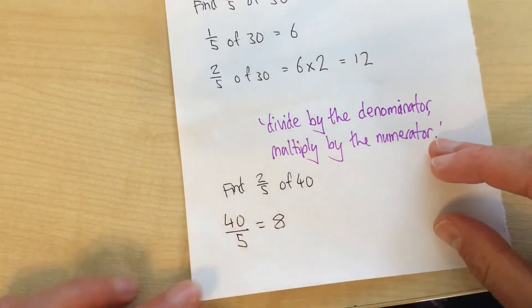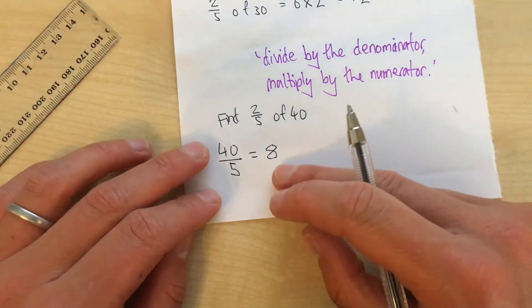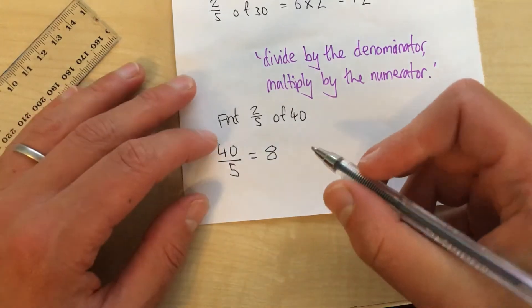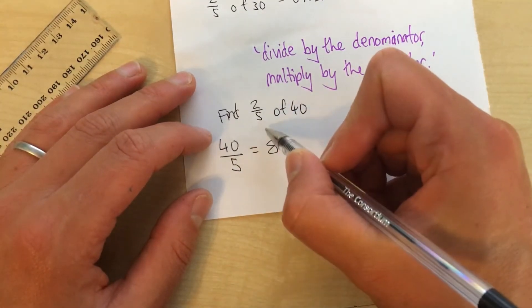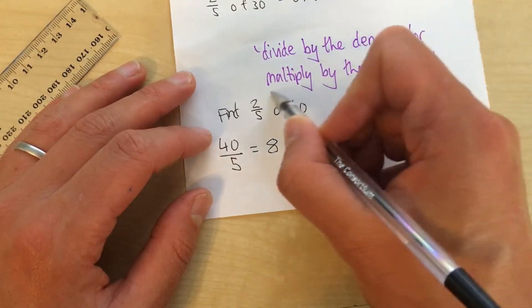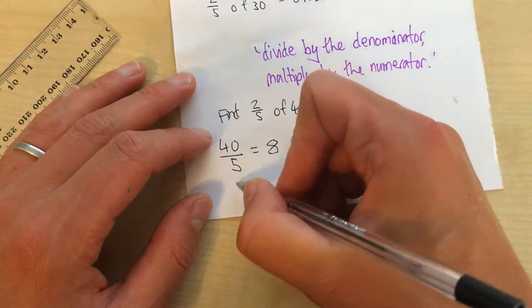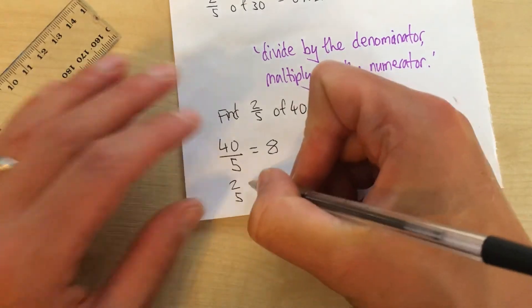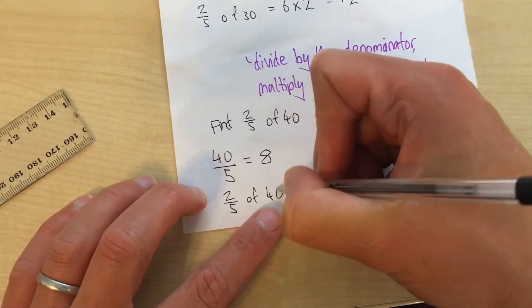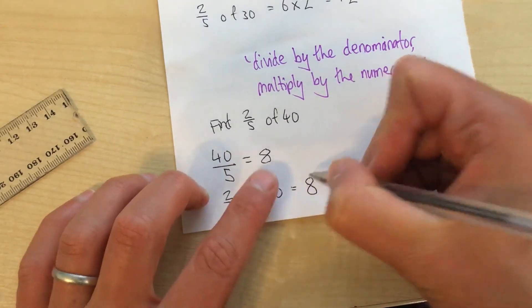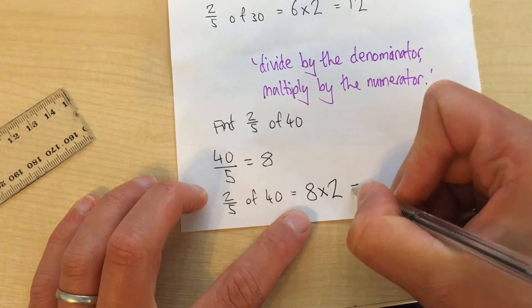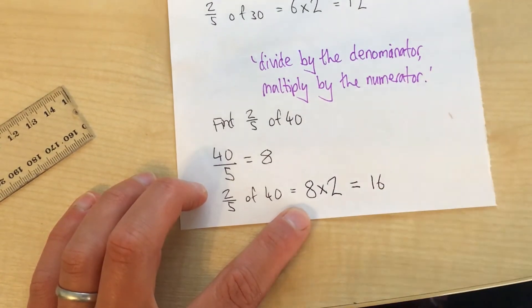And then we multiply by the numerator. We've just worked out what 1 fifth of 40 is. So if we want 2 fifths, we need to multiply it by 2. That's why this works. So I can write 2 fifths of 40 equals 1 fifth, which is 8 multiplied by 2. And 8 multiplied by 2 is 16.